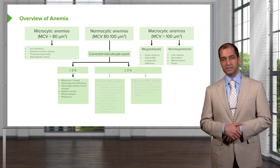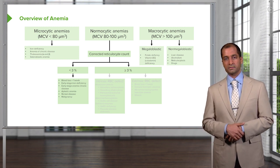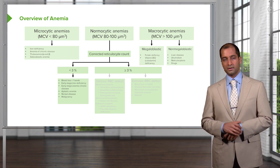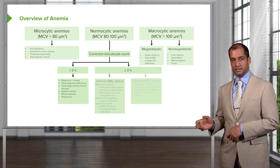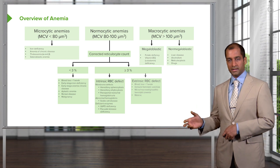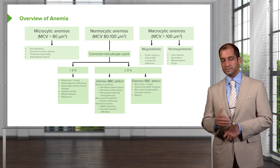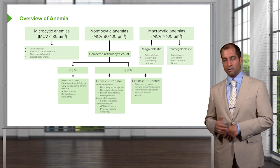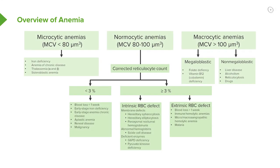The grave site for an RBC is the spleen. The two remaining categories — the middle and the right — are all hemolytics. All of these will at some point end up at the spleen, or perhaps intravascularly. There's going to be destruction of that RBC because there was no problem with the bone marrow — hence, we call it hemolytic anemia.